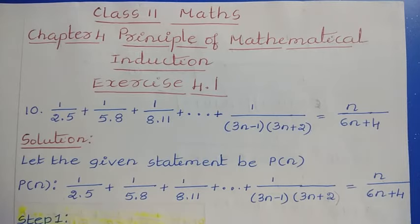Question number 10: 1/(2×5) + 1/(5×8) + 1/(8×11) + ... up to 1/((3N−1)(3N+2)) is equal to N/(6N+4).